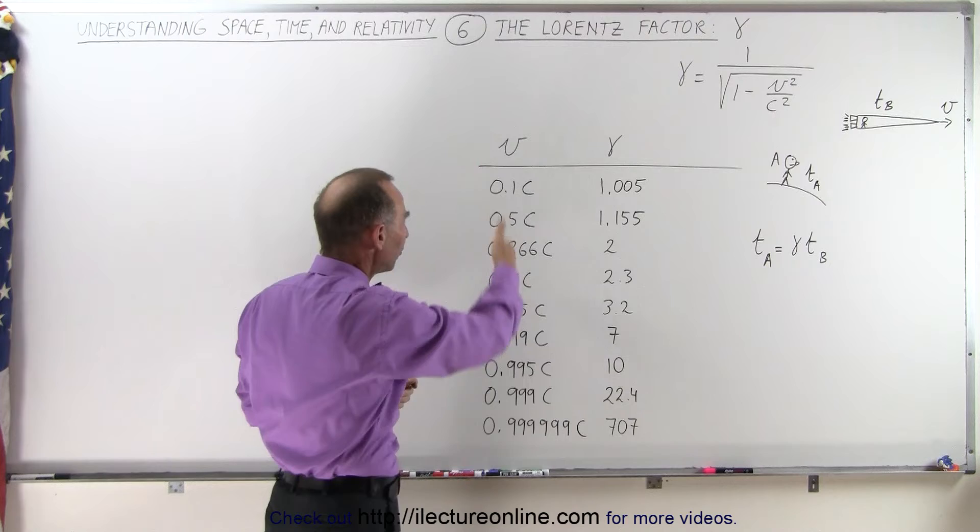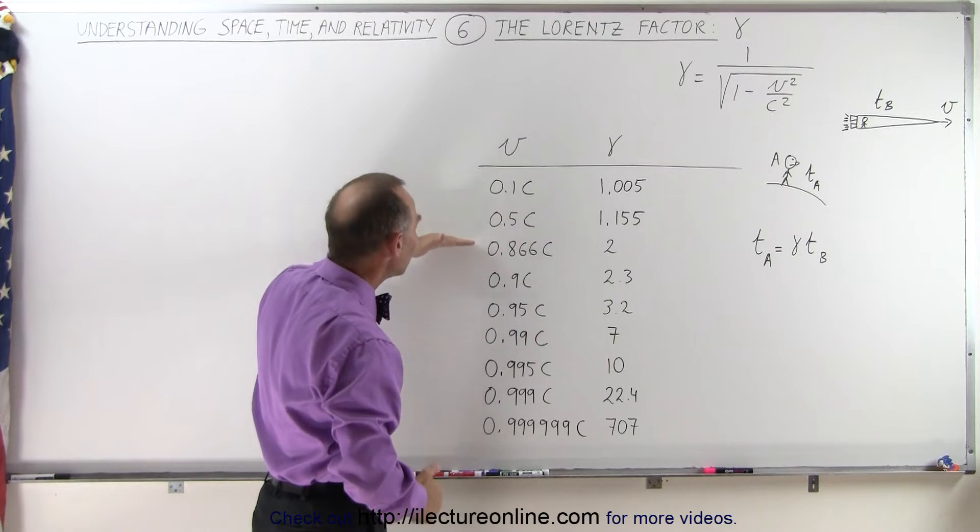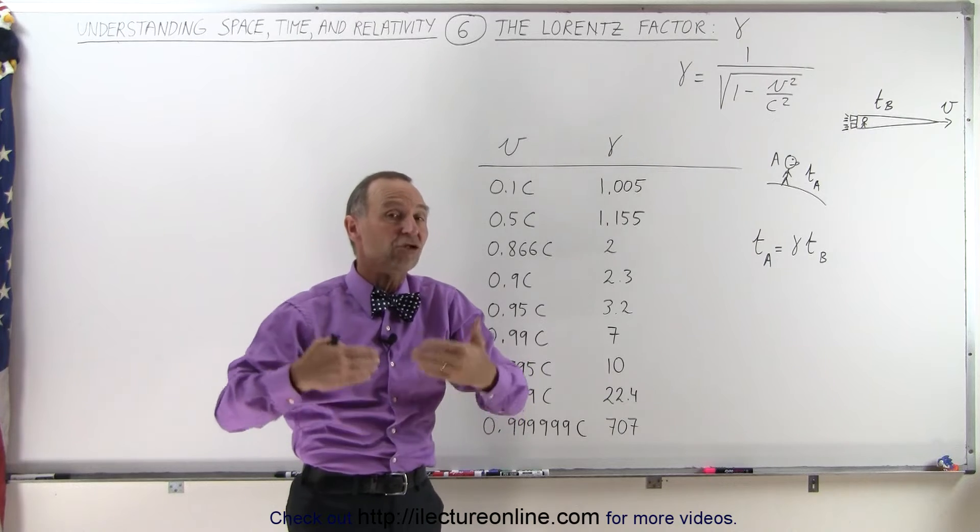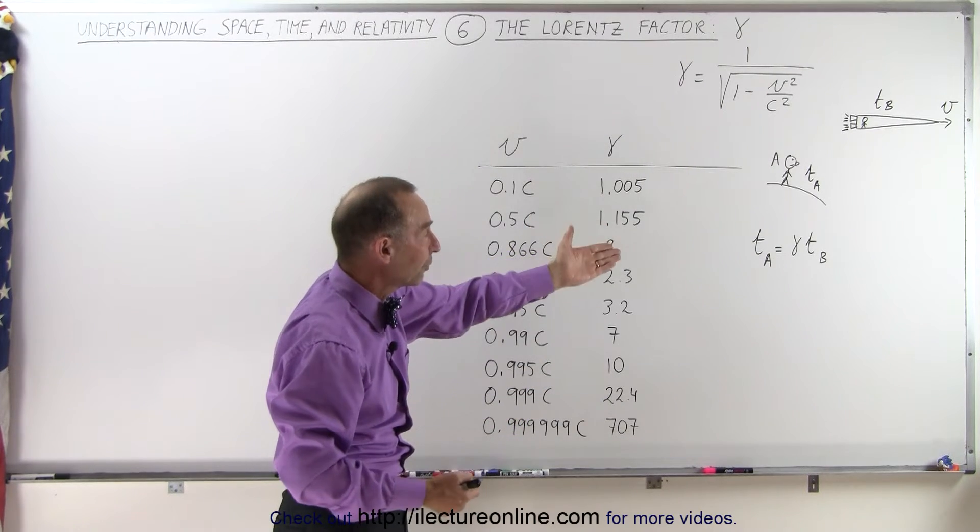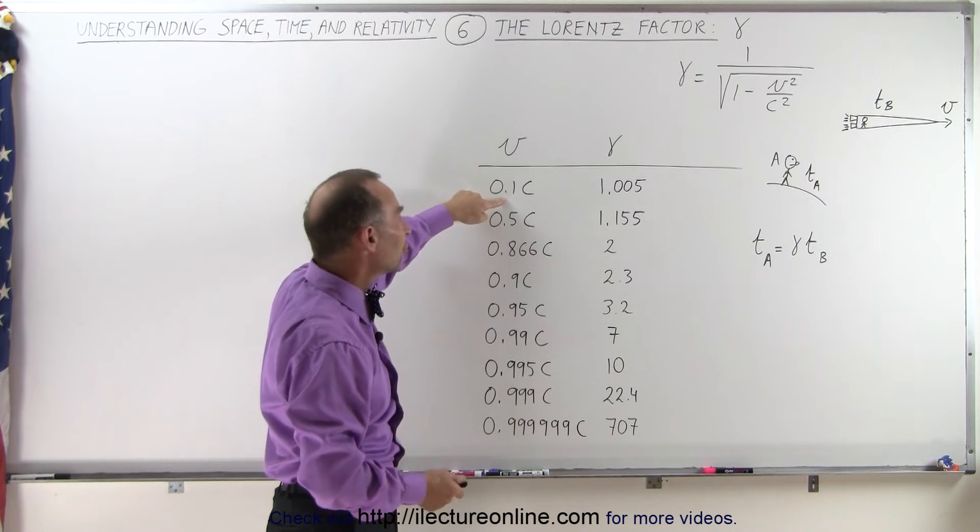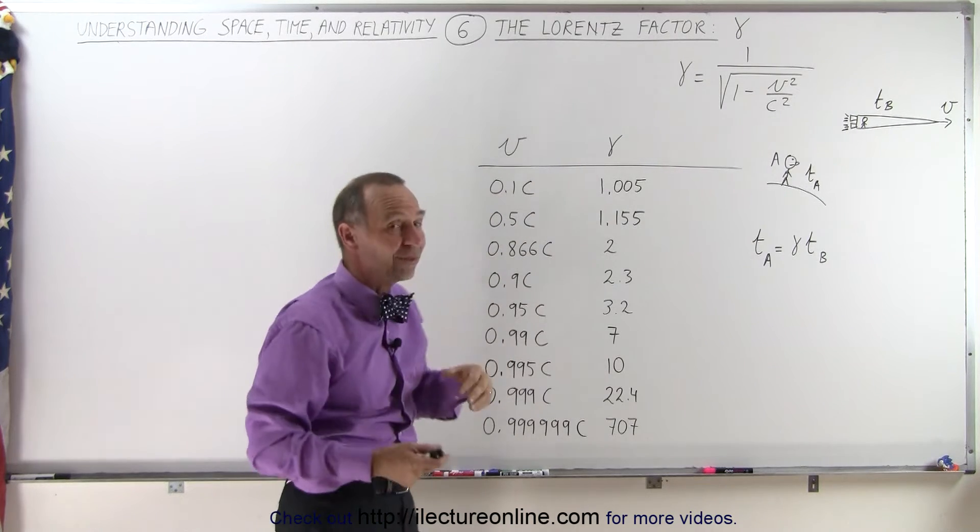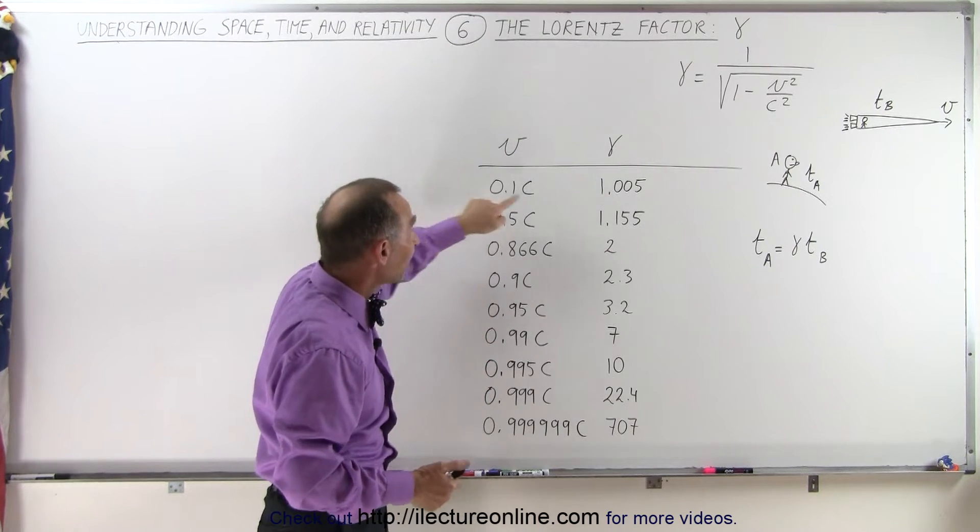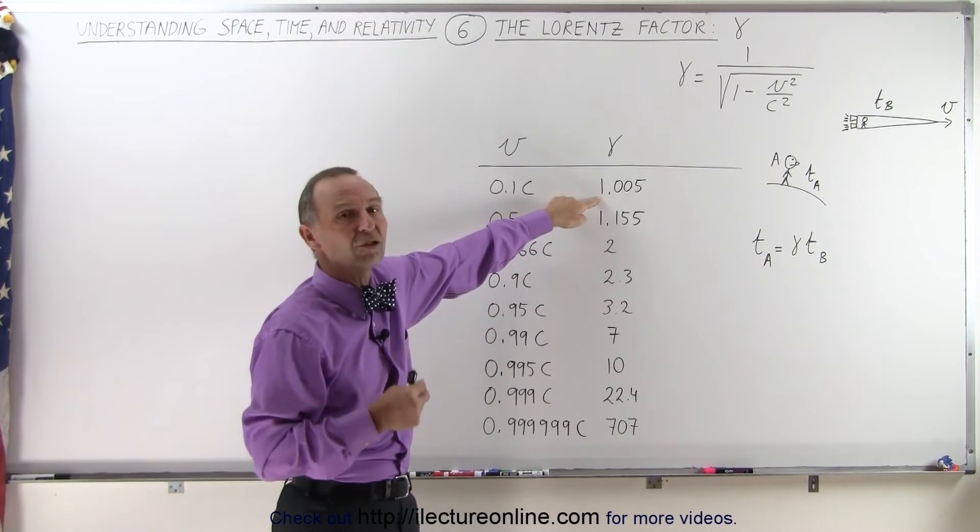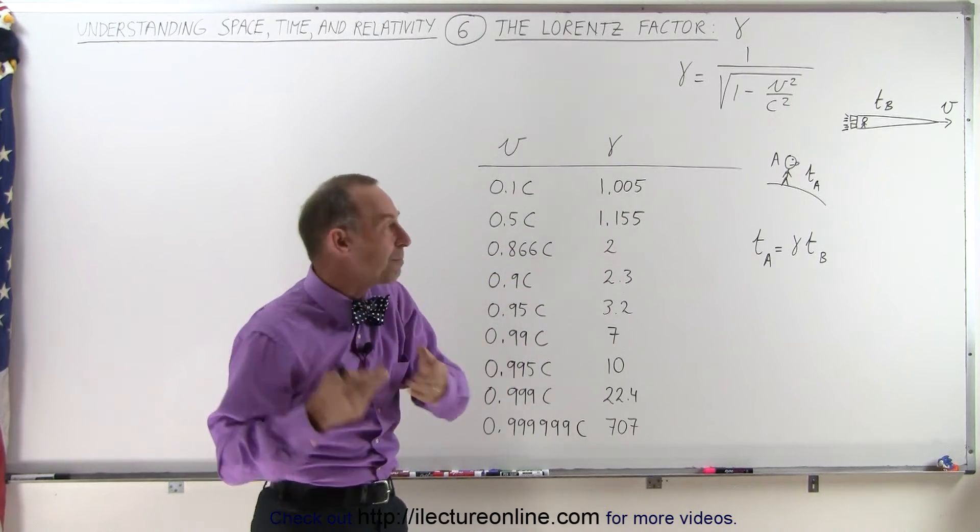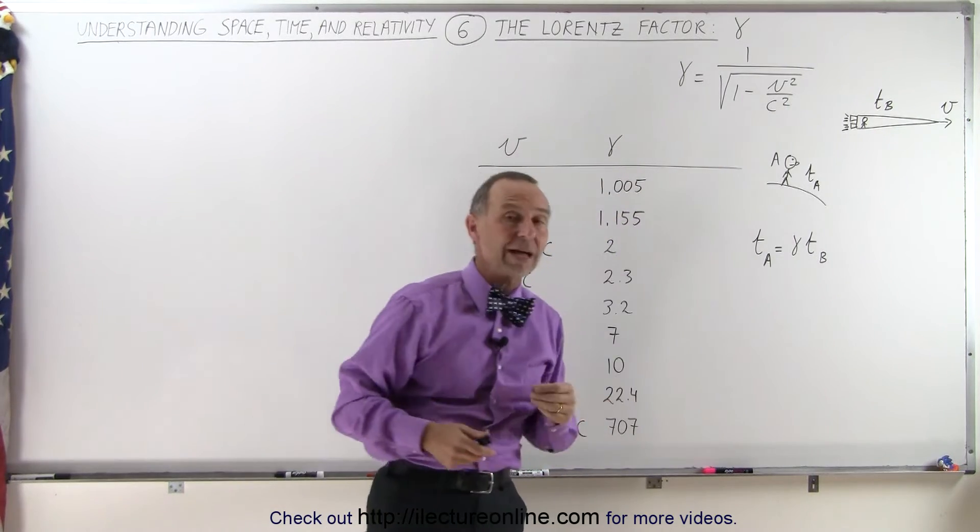Here we have a list for various velocities showing what the factor would be, and what would be the change in measured time by observer A relative to observer B. If the object is moving at 0.1 times C, 10% of the speed of light—that's quite fast—the factor is still relatively small. There's only a 0.5% change in the time measured by A relative to B.